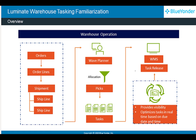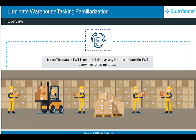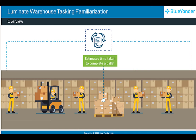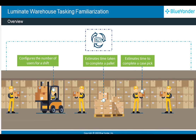Once the tasks are released for execution, LWT will provide visibility and optimize them near real time, based on the due date and time. Note that the data in LWT is obtained near real time, as any input is updated in LWT every 5 to 10 minutes. This way, LWT estimates the goal time by determining the time taken to complete a pallet or a case pick.